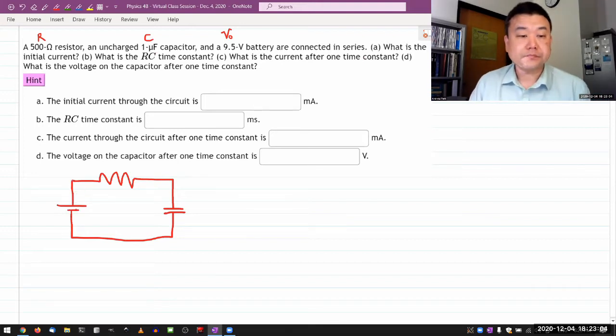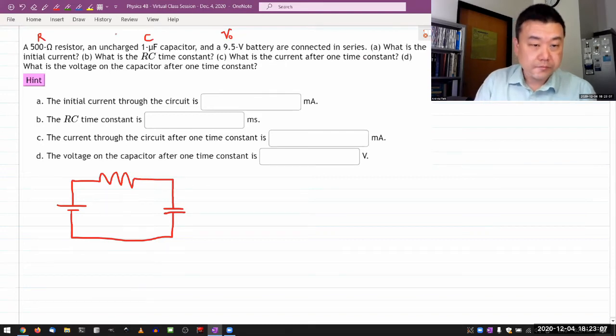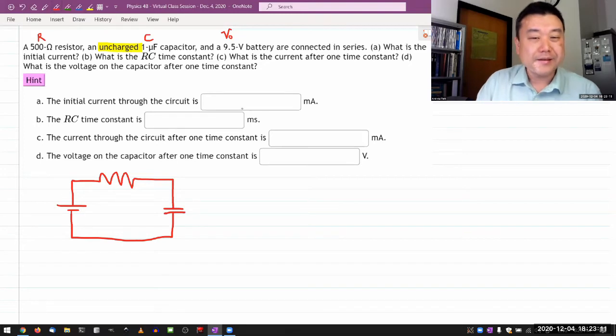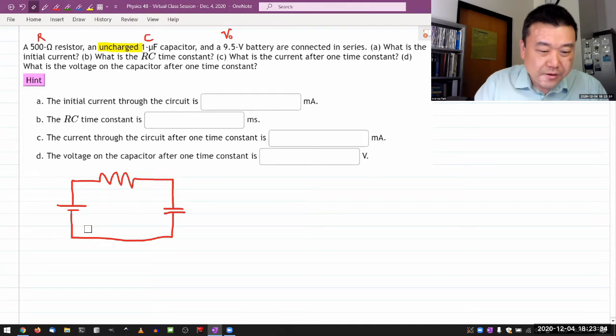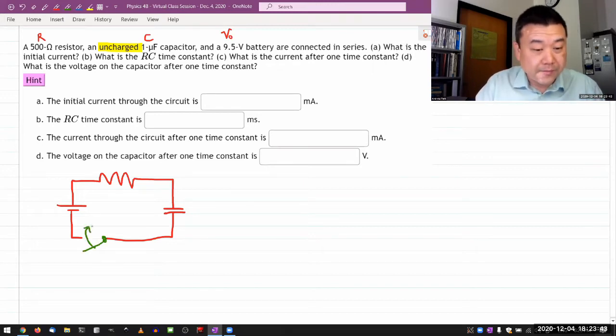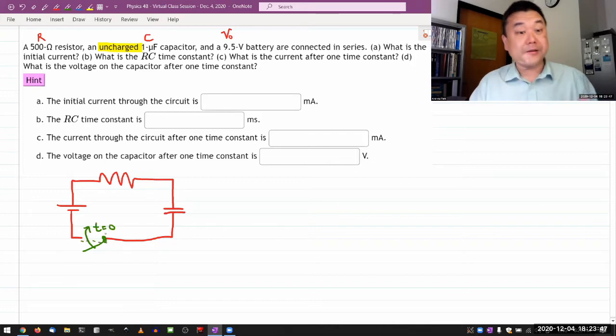So it asks, oh, I guess it says uncharged the capacitor. That is important. So it says, what is the initial current? So you can imagine, okay, so there's a switch of a sort, and you are asking questions for, okay, at time equals zero, I'm going to close the switch. And what's happening there?